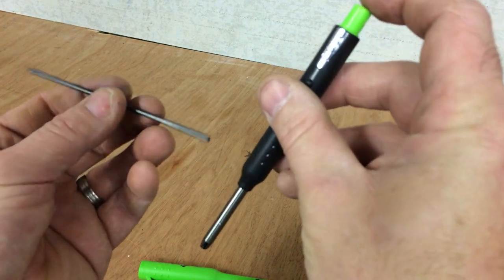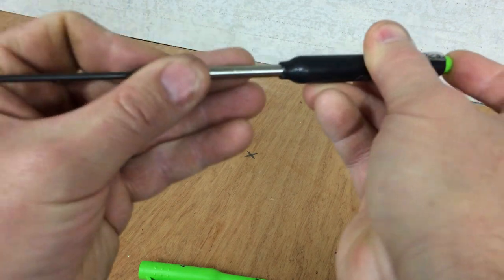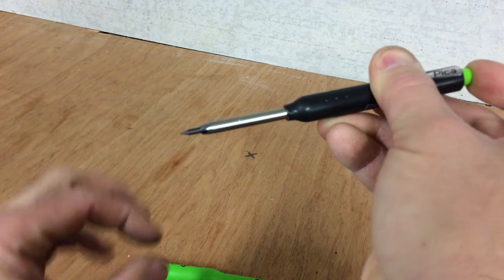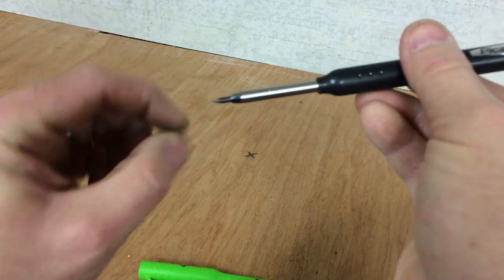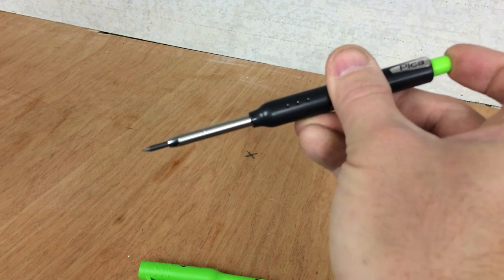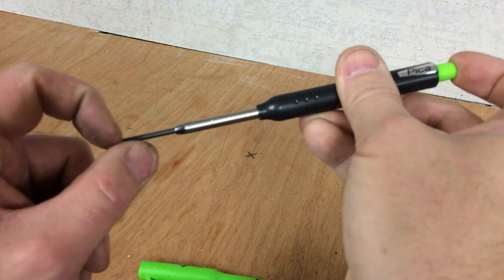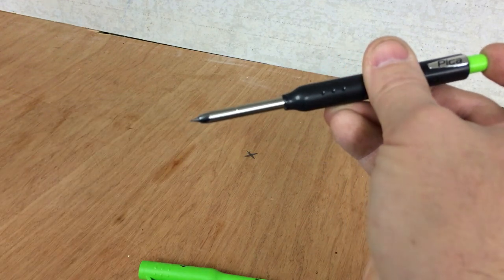To insert the lead back into the pencil, you just hold down on the button, push it on the end, keep your finger, hold down the button, and then release the button, that lead's solid. Obviously to extend the lead just push the button like so. Get it back in, hold the button in, push it back, that's perfect.